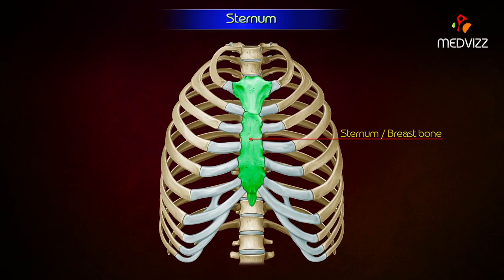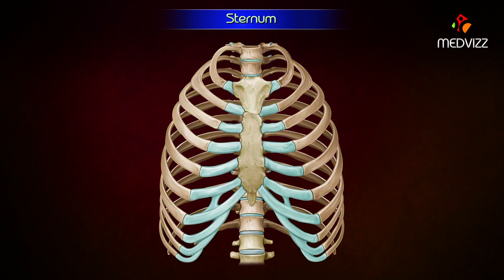Sternum. The sternum or breast bone is an elongated flat bone which lies in the anterior median part of the chest wall.